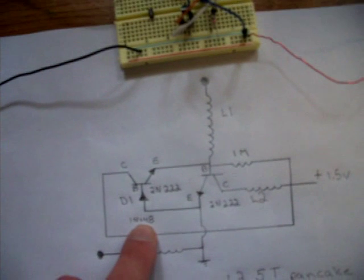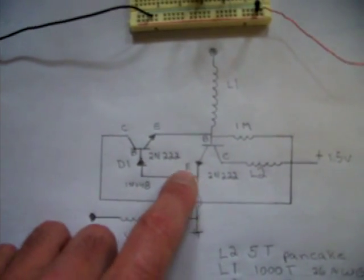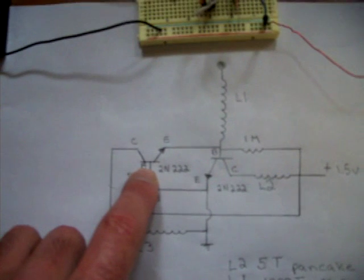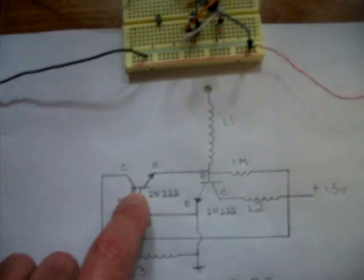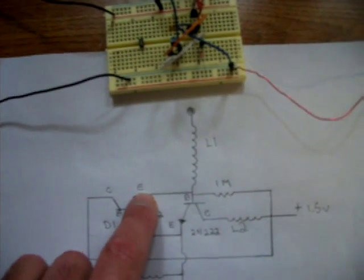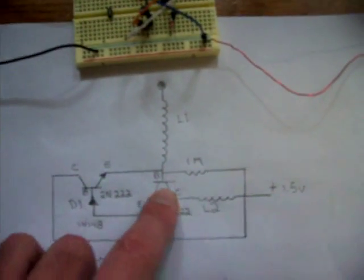Here's a 1N148 diode coming off the negative side, cathode facing the base of the transistor. Then the emitter of this transistor goes to the base of the first one.